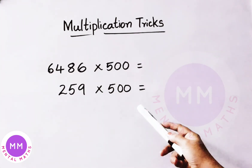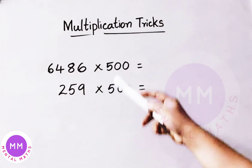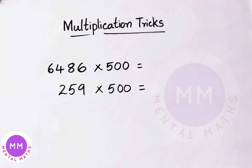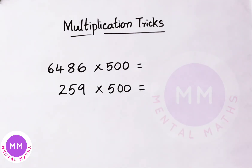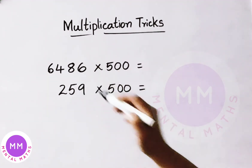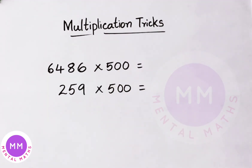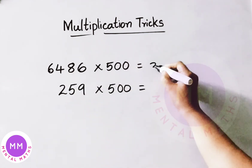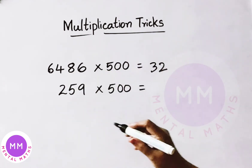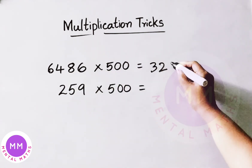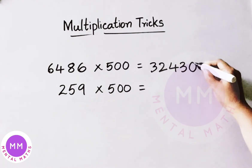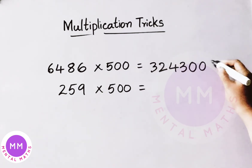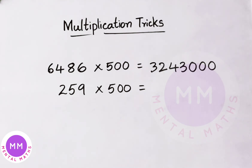See in the next examples, we are going to multiply the given numbers by 500. 6486 multiplied by 500 — quickly how we shall solve? Divide the given value by 2: 64 half is 32, 86 half is 43. Now multiply this value by 1000, that means add 3 zeros at last. So this is the result: 3,243,000.